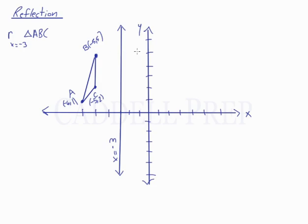So we have 1, 2, 1, 2, then we're going to keep the same height. So this is B prime now.